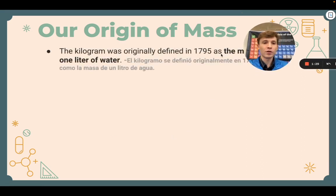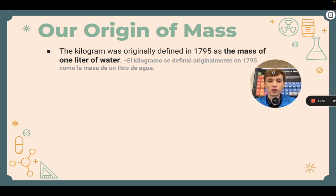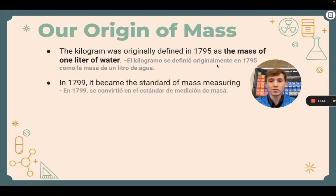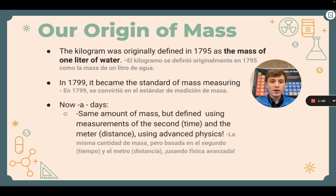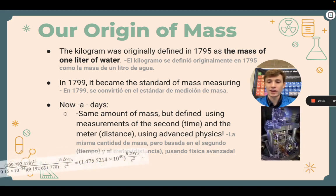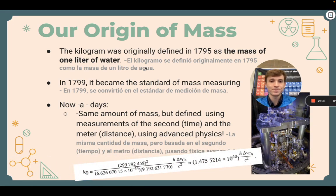Where does our origin of mass come from? We originally defined the kilogram in 1795 as the mass of one liter of water, and in 1799 it became the standard of mass measuring as a base scientific unit. Nowadays we define a kilogram with the same amount of mass, but instead of defining it as the mass of one liter of water, we define it using measurements of the second and meter, which is done using some advanced physics and advanced technical machinery — but it's still the same amount of mass.